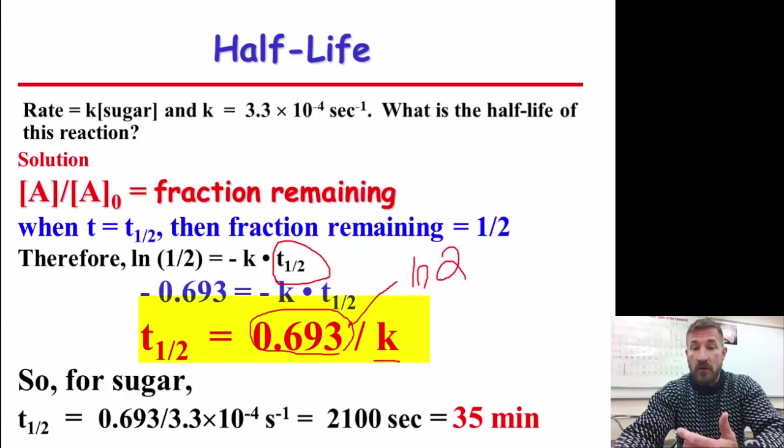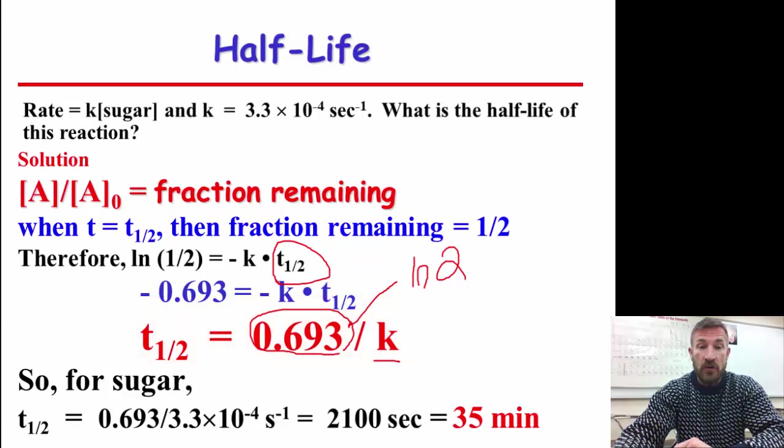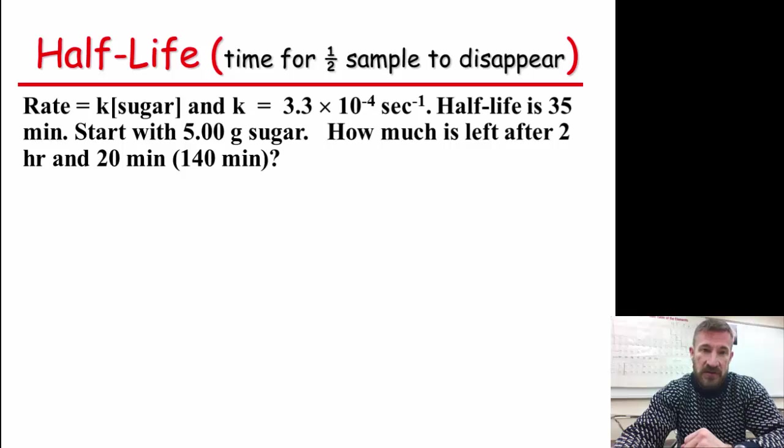So for sugar, simply what we do is take the 0.693 divided by the value of K, our rate constant, and we get the half-life in seconds, and we can also convert that to minutes.